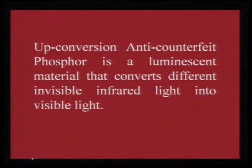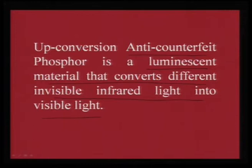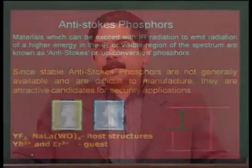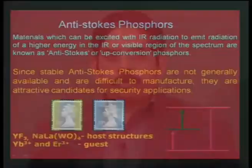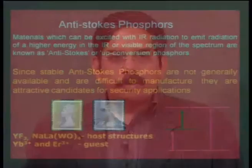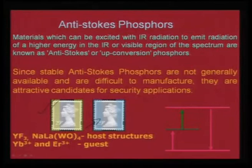Up-conversion phosphors are used as anti-counterfeit phosphors — they are luminescent materials that convert invisible infrared light into visible light. When going through a security zone, identity cards are scanned with infrared light. In normal light a tag might appear to have two different patterns, but in the infrared it must glow consistently. These are special phosphors that take low energy and emit at higher energy.